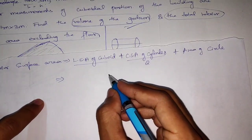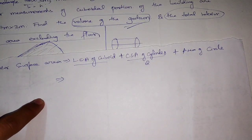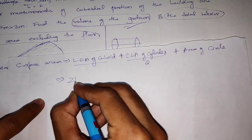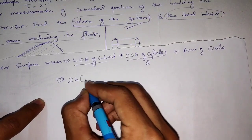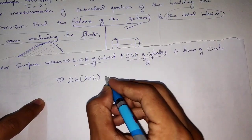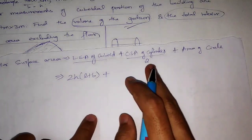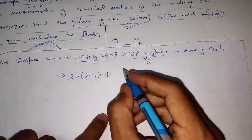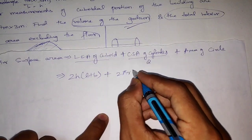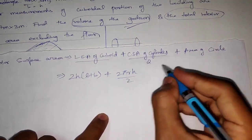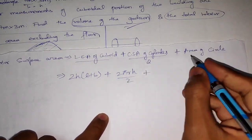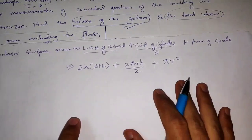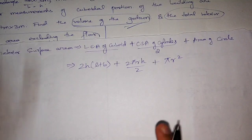For the total interior surface area: LSA of cuboid + CSA of cylinder (that is 2πrh divided by 2) + area of circle (πr²).